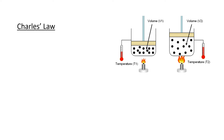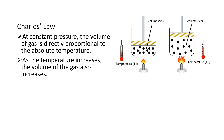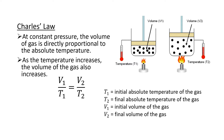Another gas law is Charles' Law, named after French physicist Jacques Charles in the 18th century. It states that at constant pressure, the volume of the gas is directly proportional to the absolute temperature, meaning as the temperature increases, the volume also increases. Charles' Law is expressed as V1/T1 = V2/T2, where T1 and T2 are the initial and final absolute temperatures, and V1 and V2 are the initial and final volumes.